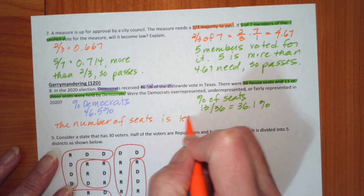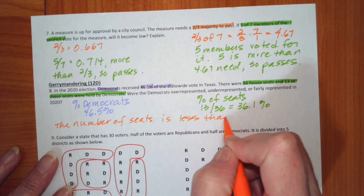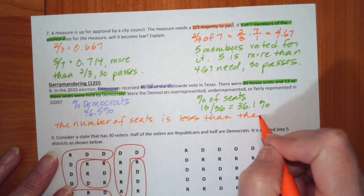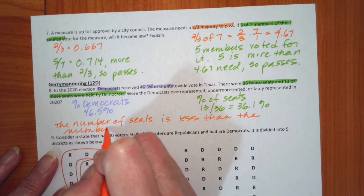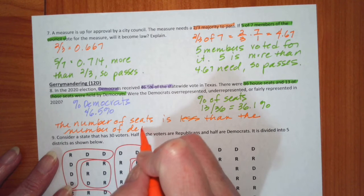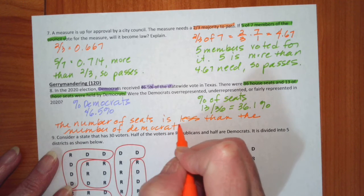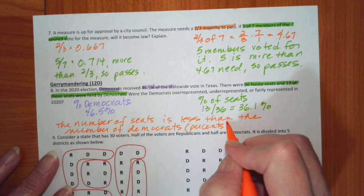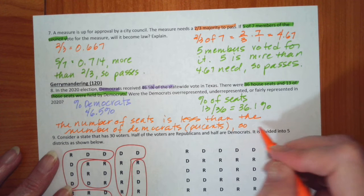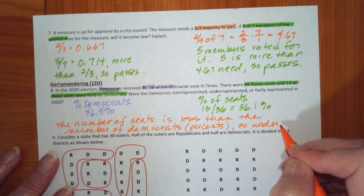So when we compare those, we can see that the number of seats is less than the number of Democrats. Of course, we're doing this in percents. So they are underrepresented.